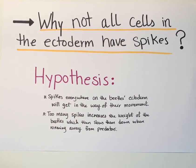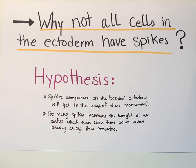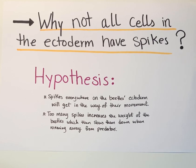Spikes everywhere on the beetle's ectoderm will get in the way of the beetle's movement. Too many spikes also increase the weight of the beetle, which eventually slows it down, and this is critical when the beetle is running away from predators. This is why some of the ectoderm cells have spikes and others are smooth.